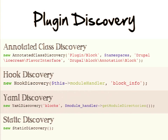Finally, there's static discovery, which is essentially the equivalent of hard-coding it — you create a new class that provides a list of all the plugins of that type. This is used basically for tests. I tried to come up with a reason you would actually want static discovery aside from tests and couldn't really come up with any.